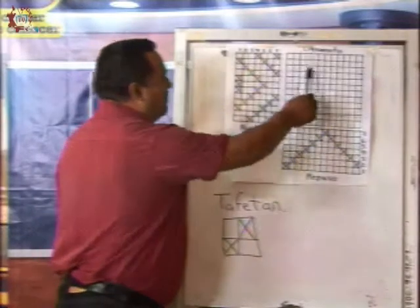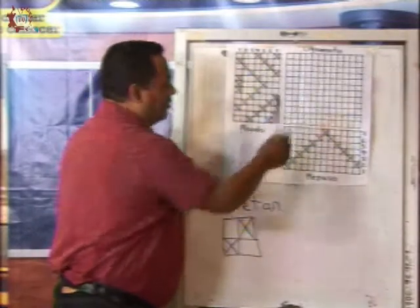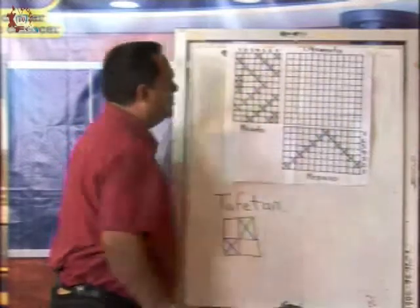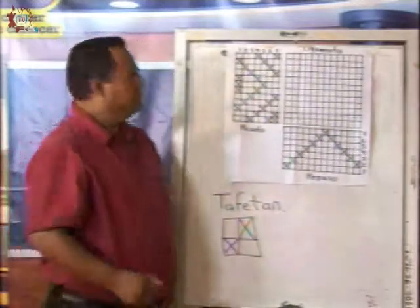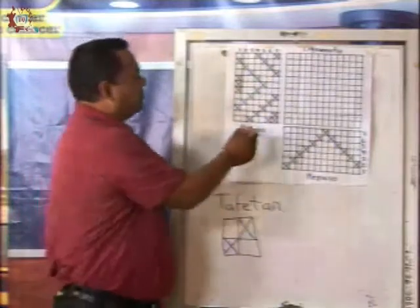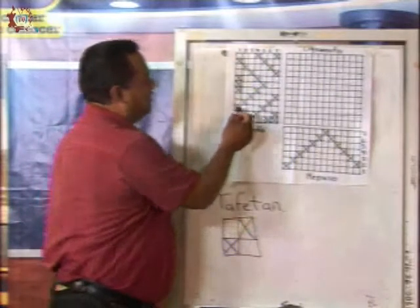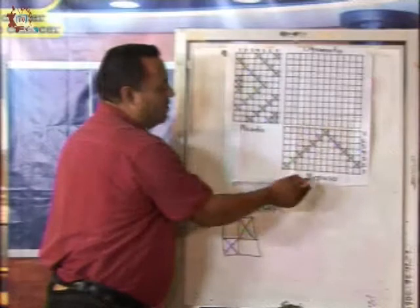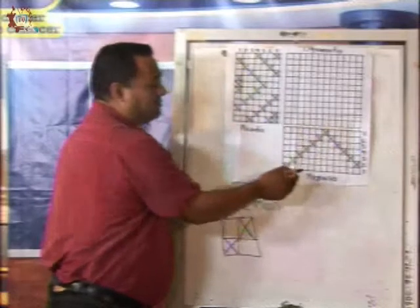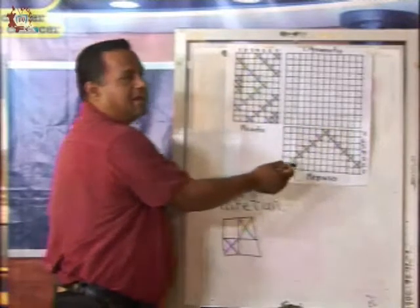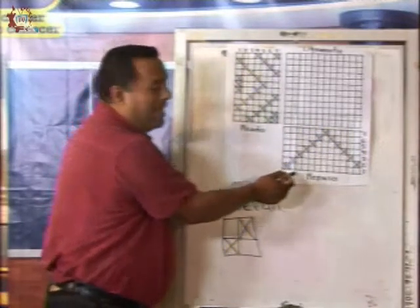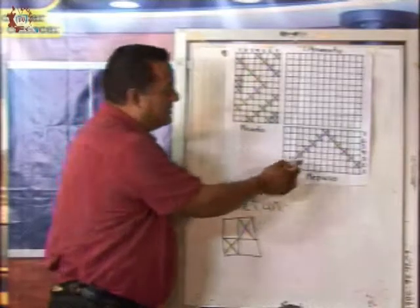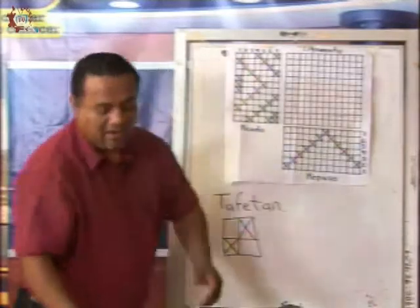Para formar un ligamento compuesto, necesitamos de un picado y un repaso. El picado es la forma en que van a evolucionar los hilos para formar este ligamento. Y el repaso es cómo van a pasar los hilos a través de los ojales, de las mallas y del telar.